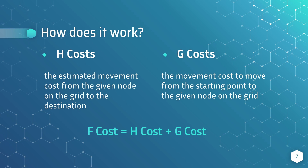The h-cost is the estimated movement cost from the node to the destination. On the other hand, the g-cost is the movement cost to move from the starting point to the target node. To get the f-cost for each node, we will add both the g-cost and h-cost together.